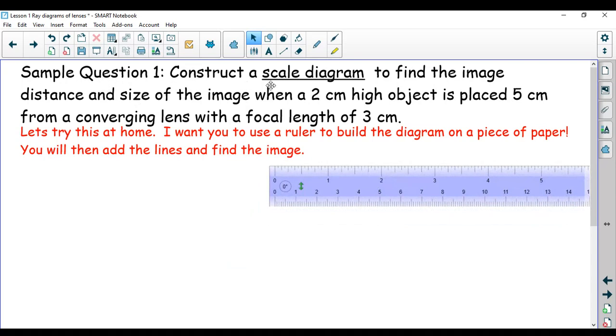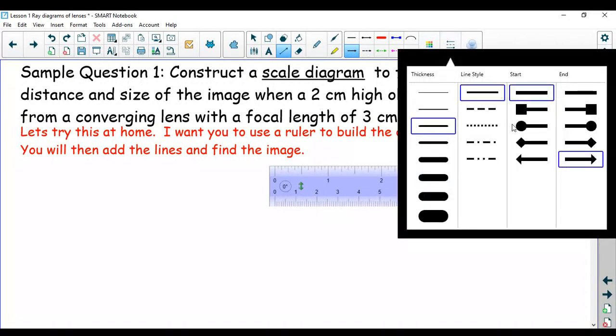And it's important to read. It says you're going to create a scale diagram to find the image distance and size of the image when a two centimeter high object is placed five centimeters from a converging lens with a focal length of three centimeters. So I'm going to start by just drawing myself my actual diagram. So for me, I can cheat a little and use my system that I've got going on. But you, of course, will do something very similar and create yourself a diagram.